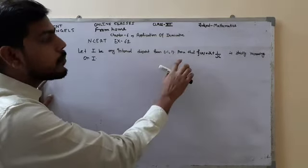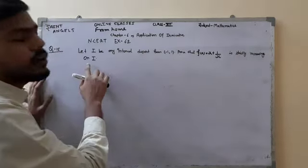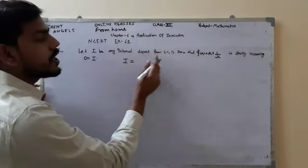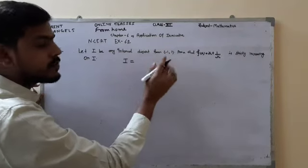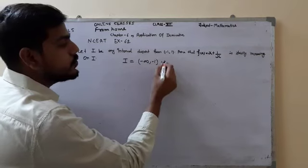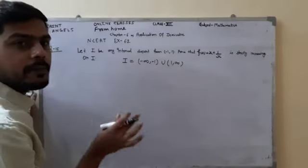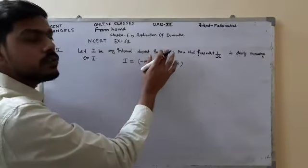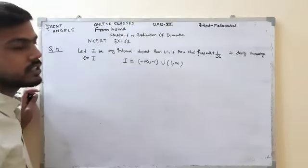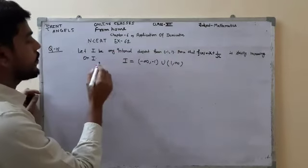Now we will look at question number 15: Let I be any interval disjoint from [-1, 1]. Prove that f(x) = x + 1/x is strictly increasing on I. So we have an interval I which is disjoint from [-1, 1], meaning I is (-∞, -1) ∪ (1, ∞). It means I don't have any points in the interval [-1, 1]. Now we will determine whether the function is increasing or decreasing.